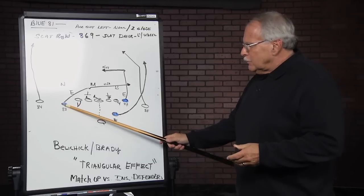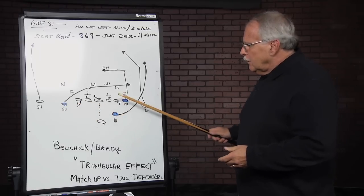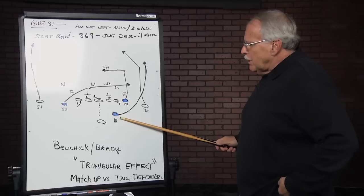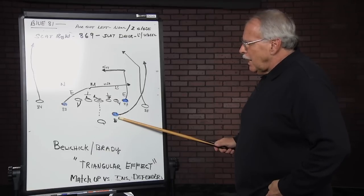That is Wes Welker at the slot, Gronkowski at the tight end, and Hernandez used somewhere as a hybrid.